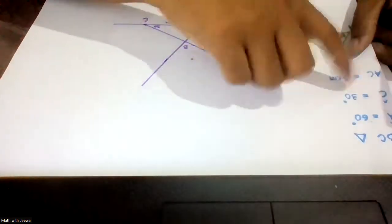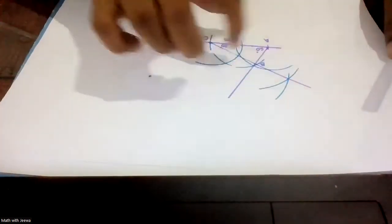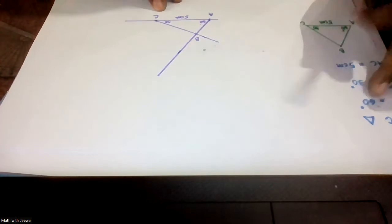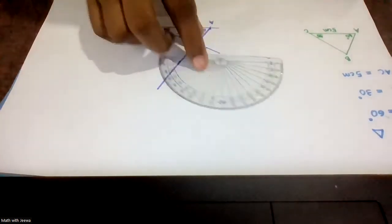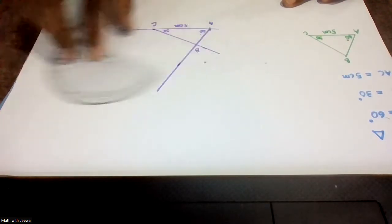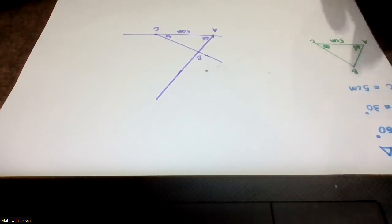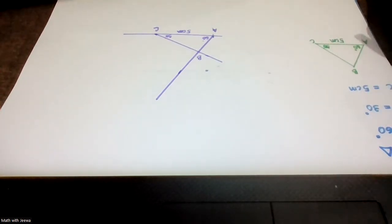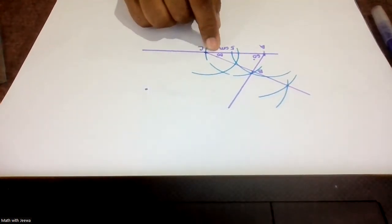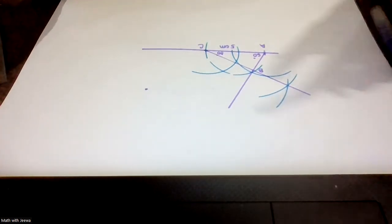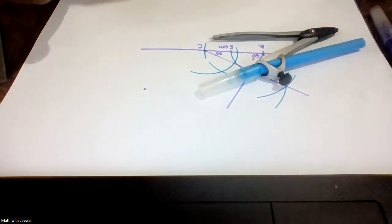Most of the time you won't get easy values like 60 and 30. When you get angles like 62 and 35, you cannot construct them with a compass — in that case you must use the protractor. In the exam, if you get odd numbers like 67 or 35, they will definitely ask you to use the protractor. But if you have angles we can construct with a compass — like 30, 60, 45, 90 — most of the time they will ask you to use the compass.